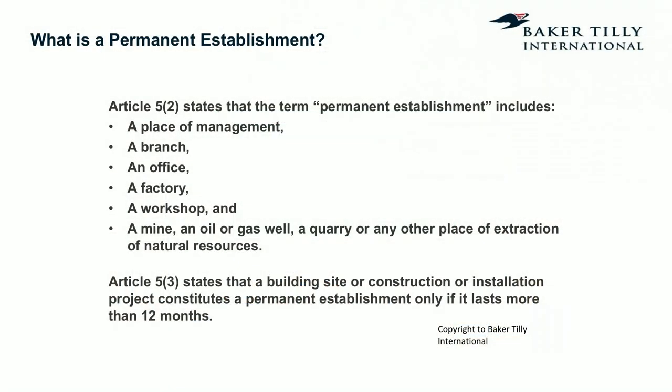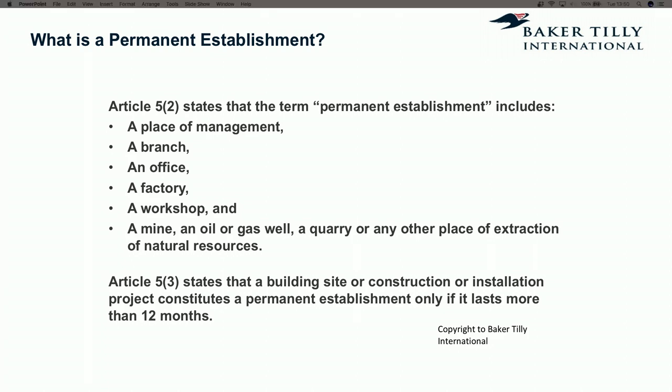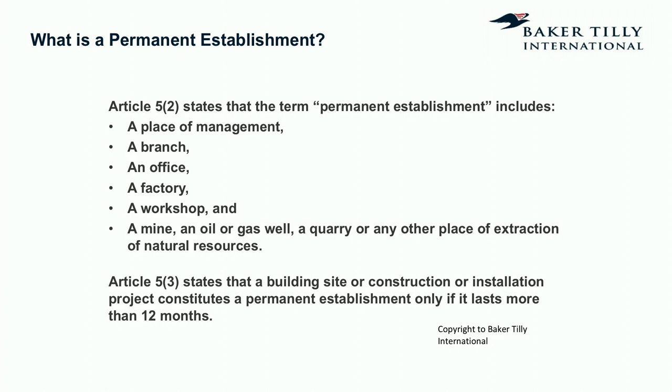Some elements of the PE definition are very straightforward. Permanent establishments include: an office, a factory, a workshop, a mine, an oil or gas well, a quarry, or other place of extraction of natural resources. Nobody would have any particular problem spotting any of those. If you come across a quarry, a workshop, a factory or an office, you'll be able to identify it. We'll talk about home offices in a bit.